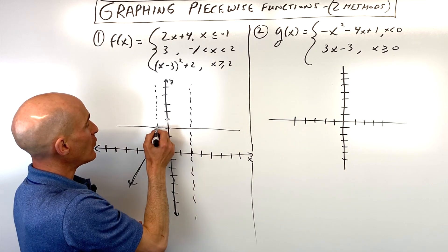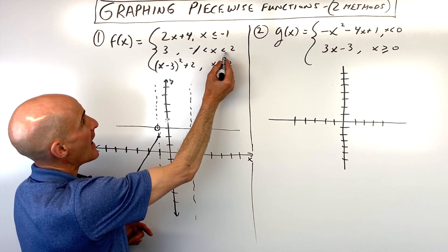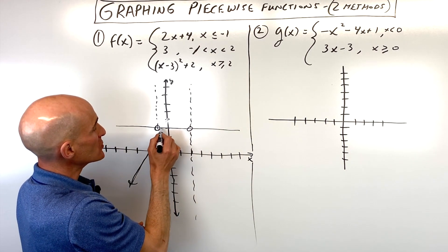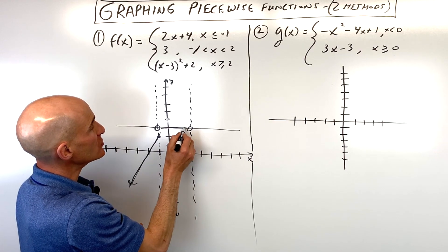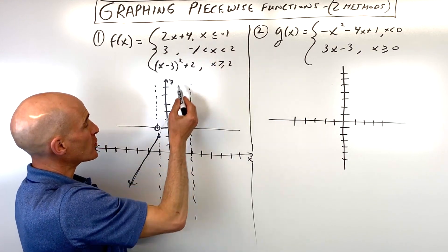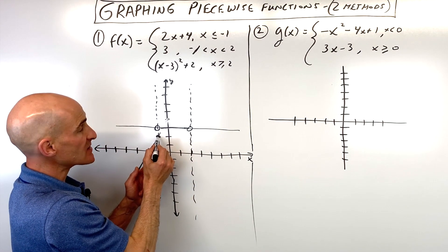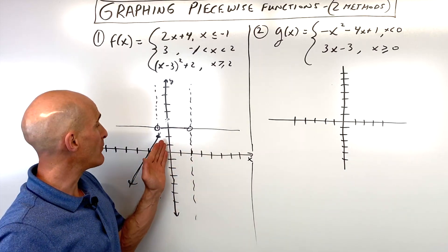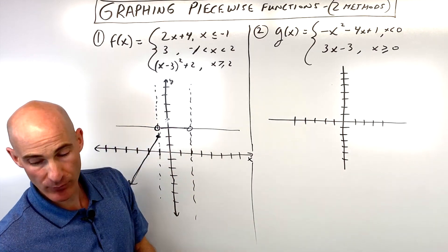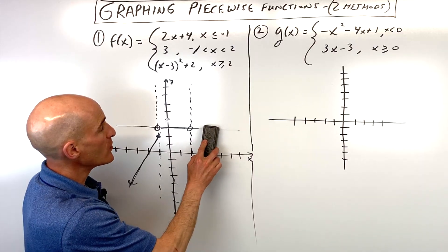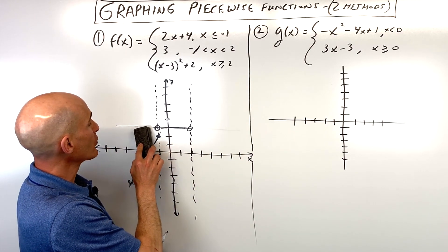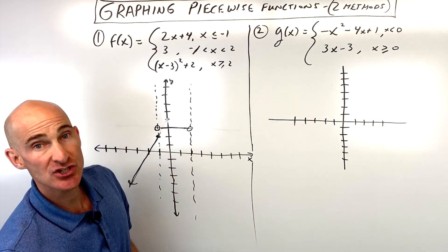So not including negative 1, so this is going to be open. Not including 2, but just less than 2, so we're in between negative 1 and 2. Notice here this was less than or equal to negative 1, that's why I have this as a closed circle. It includes that point. This is open, meaning it doesn't include that point. And the part of the graph that we don't need now, we're going to go back and erase.